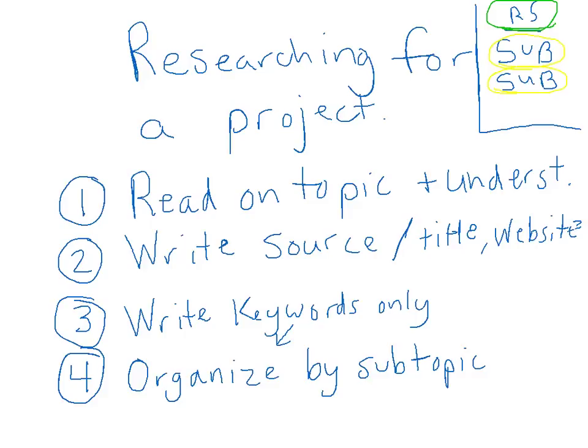You might have several subtopics, and the details under each one are all your reds. After you've done all your subtopics you would go back to the idea of rattlesnakes again. We don't know what those subtopics are going to be yet because we haven't done our research - that's back to green. The reds are going to be all the details that go along with your subtopics. Now let's say I'm researching rattlesnakes.